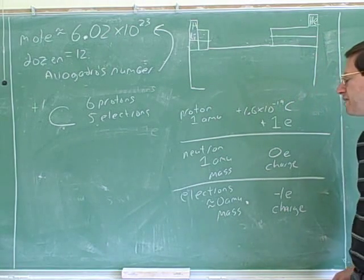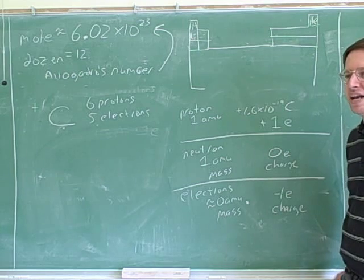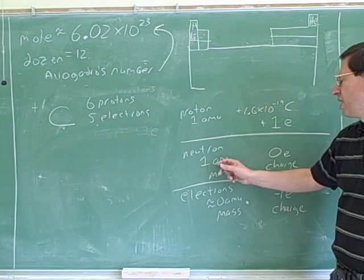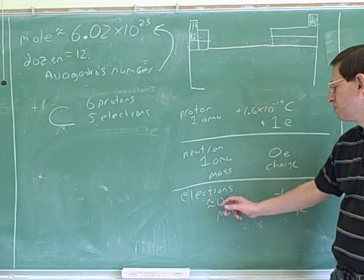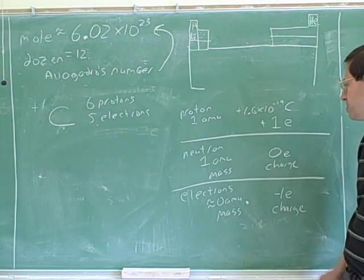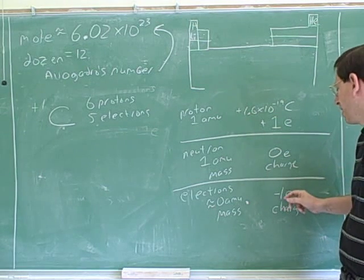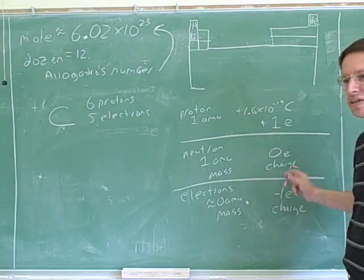So here's the key points that we need to know about the things that make up the atom. We need to know what the masses are. These have masses of one atomic mass unit, and this has almost zero mass. And we need to know the charges. Protons and electrons have charges that are equal plus 1e and negative 1e, and the neutron has no charge.